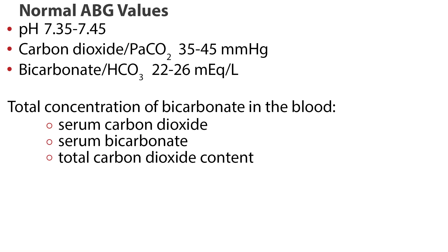When analyzing ABGs, there are several normal values that need to be memorized. When assessing acid-base status, the most important component to look at first is the pH — 7.4 is the perfect pH, with a normal range of 7.35 to 7.45. PaCO2, the partial pressure of carbon dioxide, reflects alveolar function and ranges from 35 to 45 mmHg. Bicarbonate, or HCO3, the major base component, has a normal value of 22 to 26 mEq per liter. The total concentration of bicarbonate in the blood may be referred to as serum carbon dioxide, serum bicarbonate, or total carbon dioxide content.